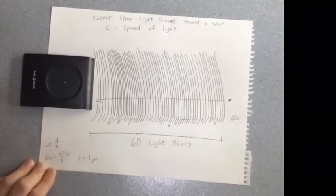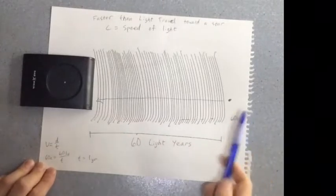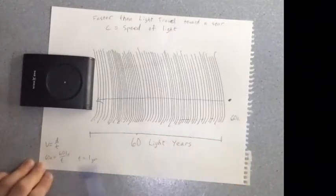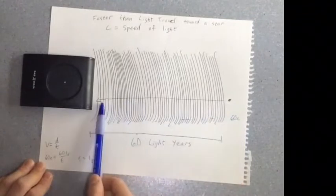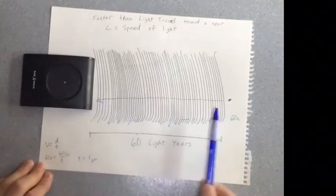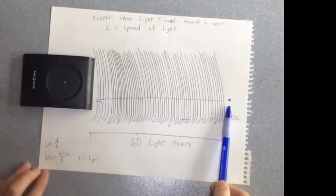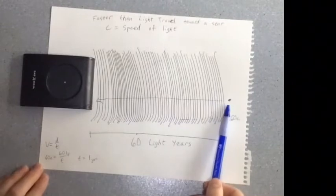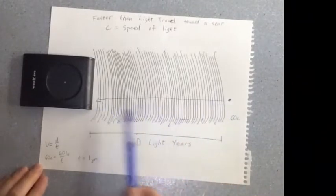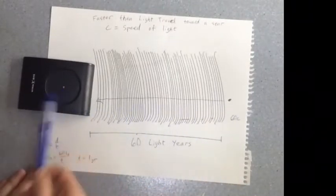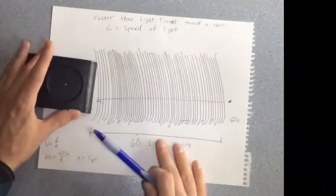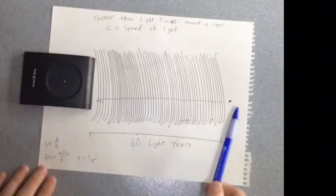The point is: if you could travel way faster than the speed of light and travel great distances like this, and if you had a really powerful telescope aboard your ship, as you're traveling you could witness 60 years' worth of our lives on Earth in only what is one year for you as the observer in your spaceship.